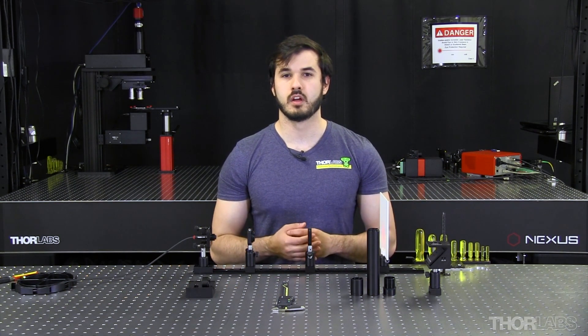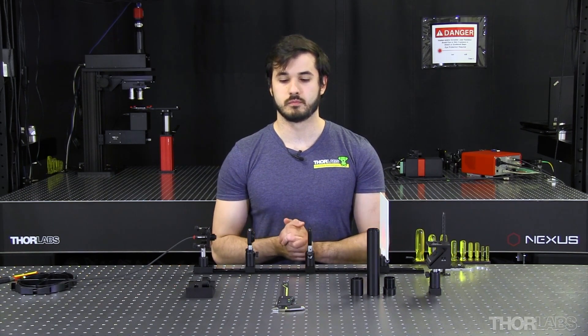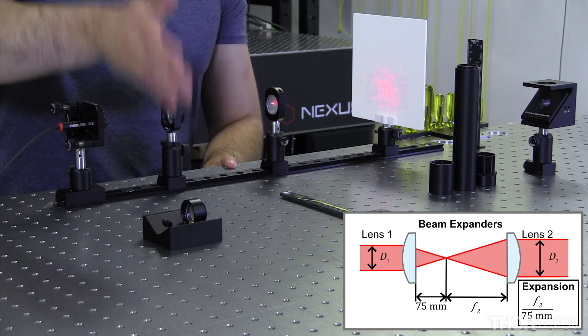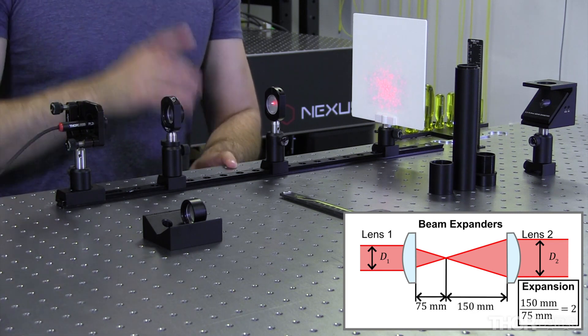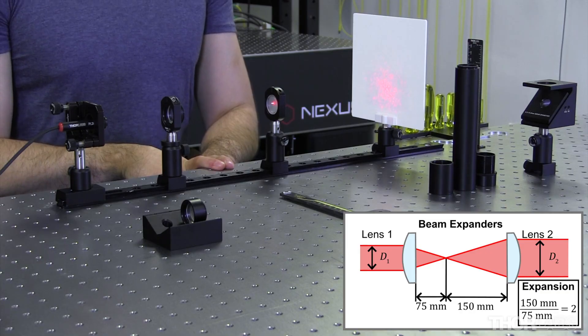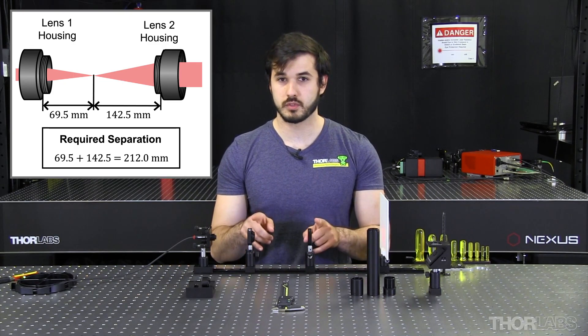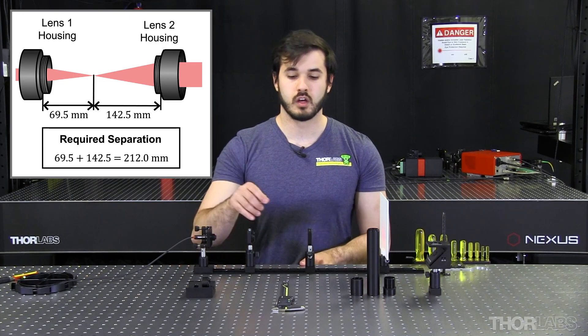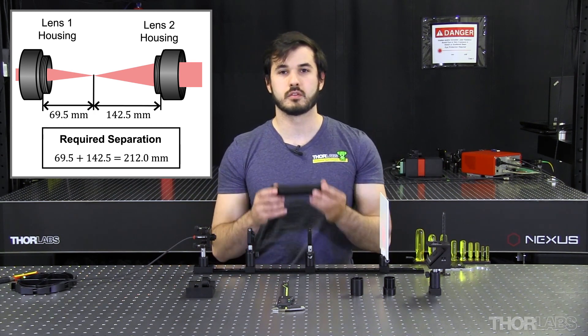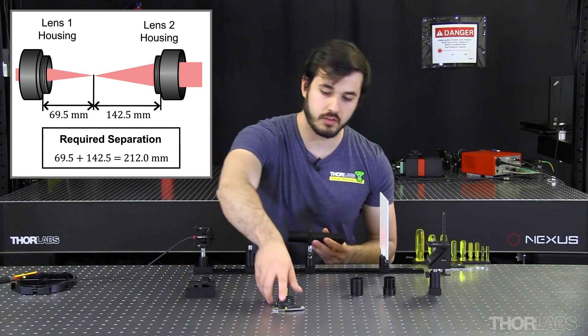In order to assemble the beam expander, we need to position both lenses' focal points at the same spot. I have a 75mm focal length lens and a 150mm focal length lens, which will make a 2x beam expander. Now that I've measured both positions, I can start measuring my lens tubes to get the correct length.